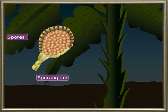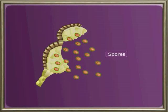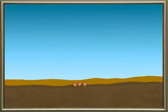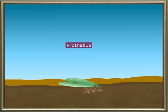When ripe, the sporangium bursts, liberating spores which are carried away by the wind. The spores are round and dark brown in colour. When they fall on moist ground, they germinate and give rise to green filaments.